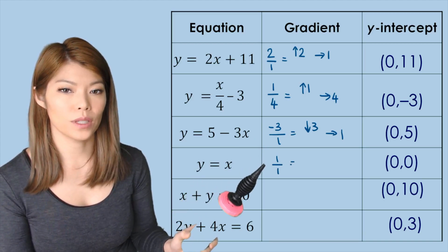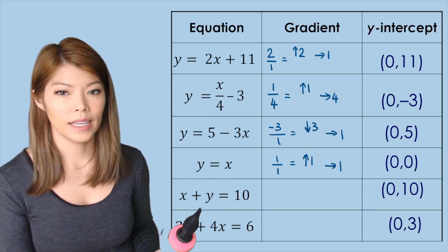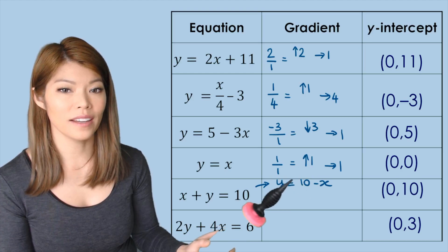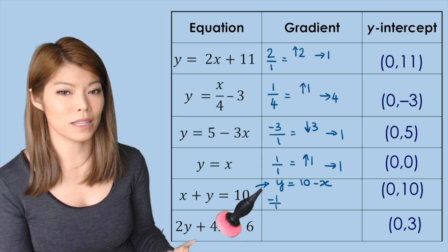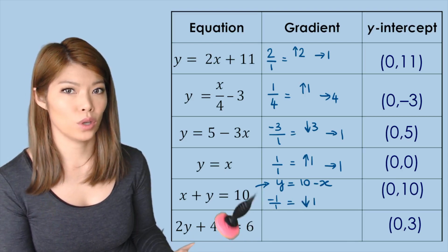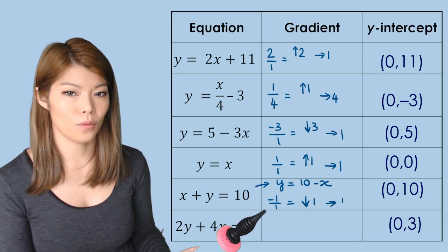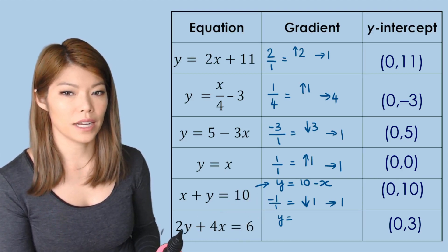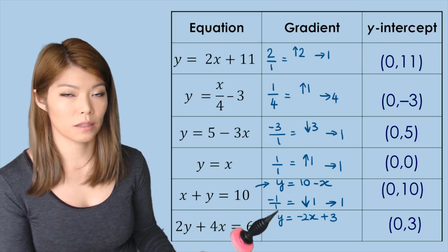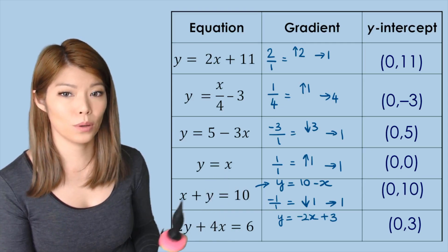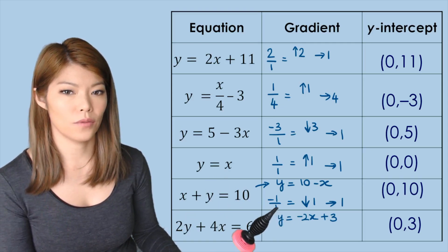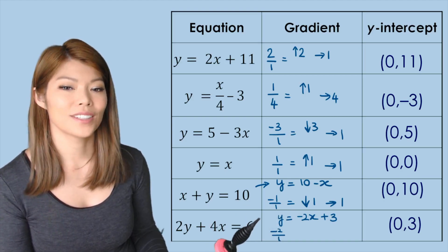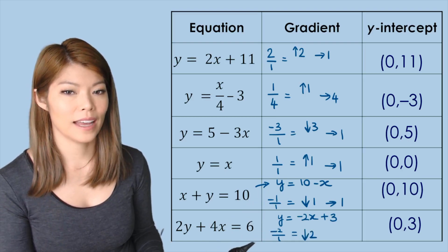For a gradient of 1, there's an invisible 1 over 1 — up 1 and across 1. For the equation rearranged to y equals negative x, the gradient is negative 1, or negative 1 over 1 — down 1 across 1. For the last equation, rearrange: bring 4x over to get 6 minus 4x, then divide by 2, giving y equals negative 2x plus 3. The gradient is negative 2, or negative 2 over 1 — down 2, across 1.